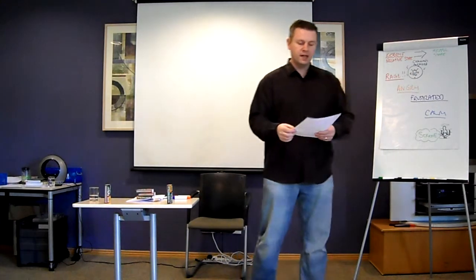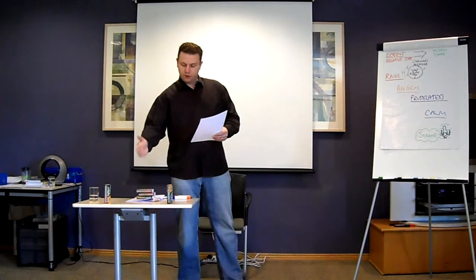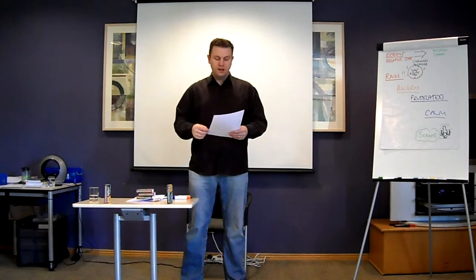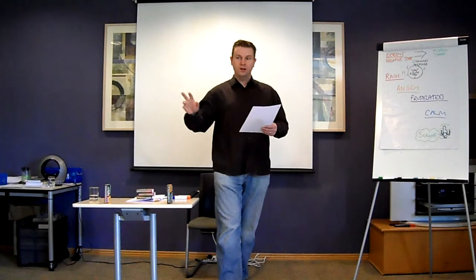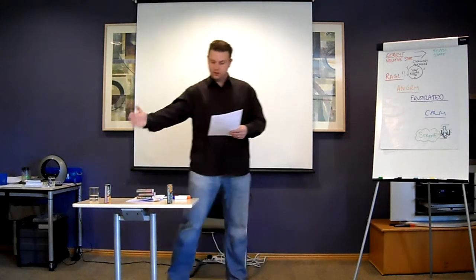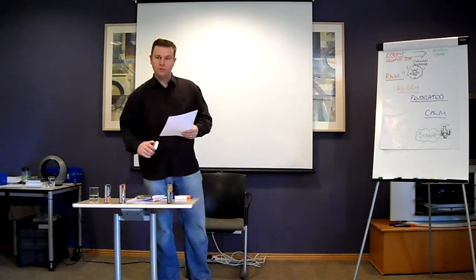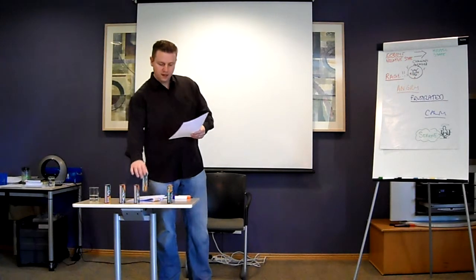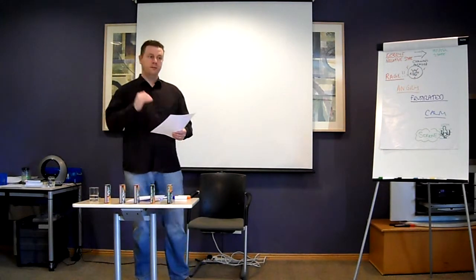So the one example here would be from depressed to happy. In the middle, I would like neutral, open, and calm before I get to happy. That's just one example. Anchor each state. So the first thing you do is anchor all five states without doing any collapsing. So you anchor depressed on one knuckle, make sure it works. Then anchor neutral on one knuckle, make sure it works. Anchor open on the next knuckle, make sure it works. Anchor calm on the next knuckle, make sure it works. And then happy on the last knuckle, and make sure it works.